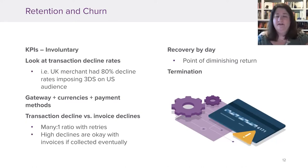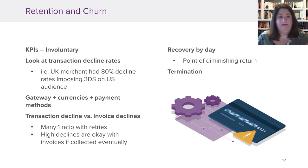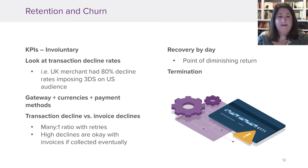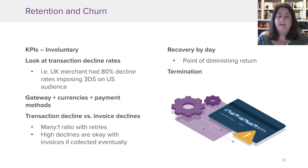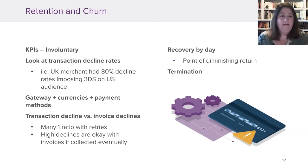When looking at involuntary churn, transaction decline rates are a key metric. One merchant in the UK launching a US business came in with 80% decline rates. It turned out that as a UK merchant, 3D Secure was very common, but in the US at that point it wasn't standard. As soon as they turned it off, their decline rate dropped to a more normal five to six percent. Those transaction decline patterns can be really insightful into what's driving your involuntary churn.